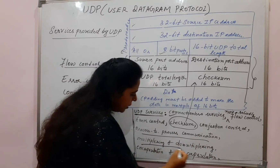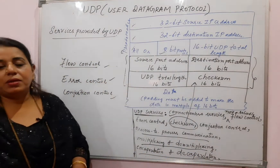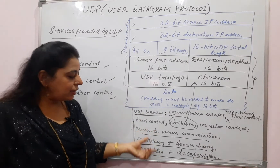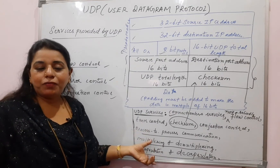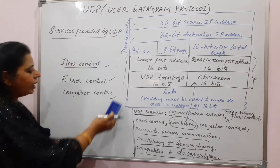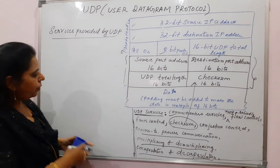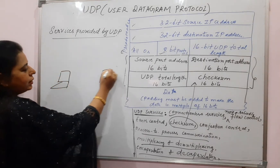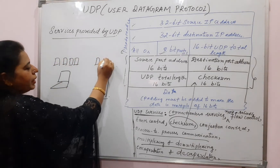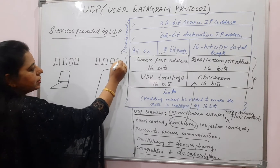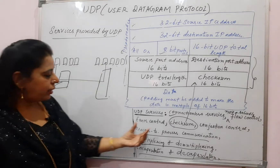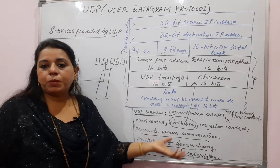The other services are process-to-process communication, multiplexing, and encapsulation and decapsulation — these three are definitely provided by any transport layer protocol. For process-to-process communication: the sender has processes at the application layer, and the receiver also has processes at the application layer. One process from the sender wants to communicate with another process at the receiver side — that is why we call it process-to-process communication. It is made possible with port numbers.